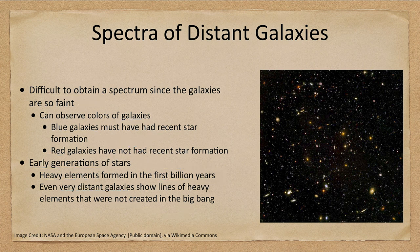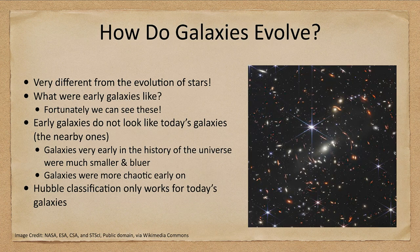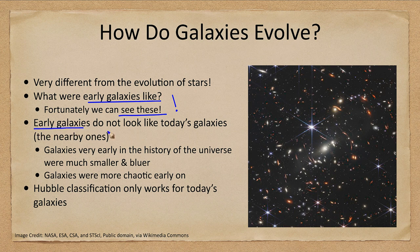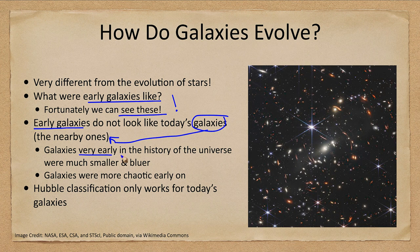How do galaxies evolve and change over time? What were the early galaxies like? We can actually see these early galaxies. What we find is that early galaxies do not look like today's nearby galaxies. Galaxies very early in the history of the universe were smaller and bluer than galaxies that we see today, and they were also much more chaotic, with a lot more distortion of galaxies due to collisions going on.